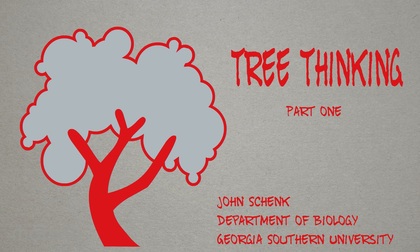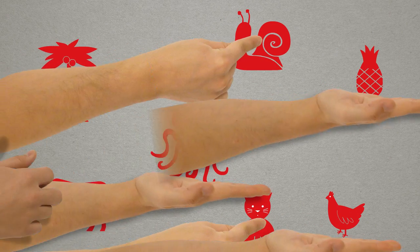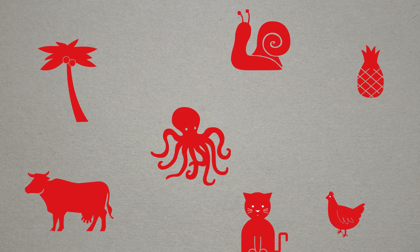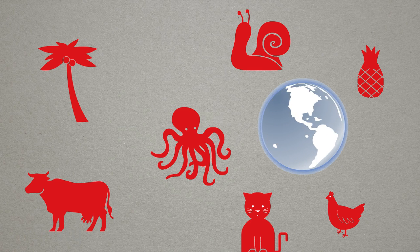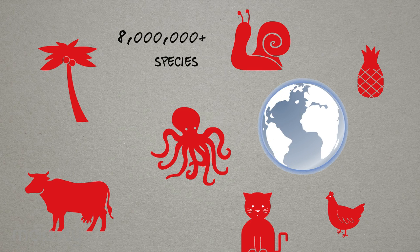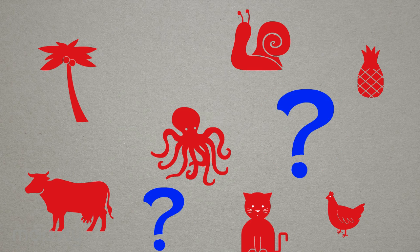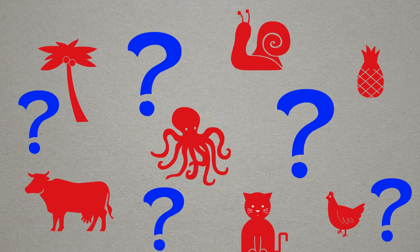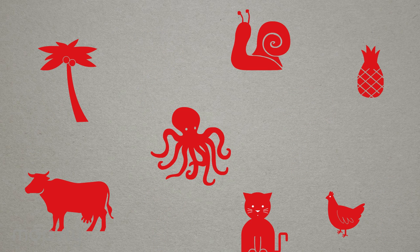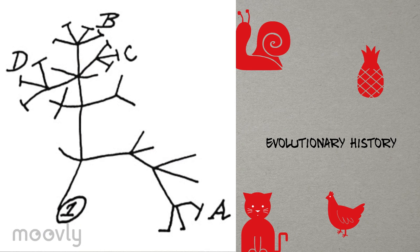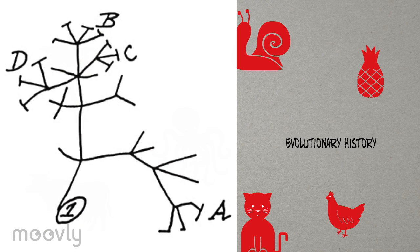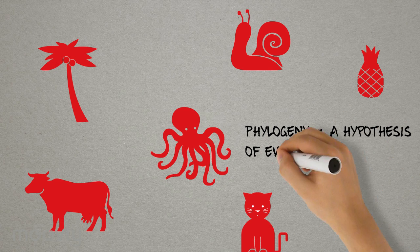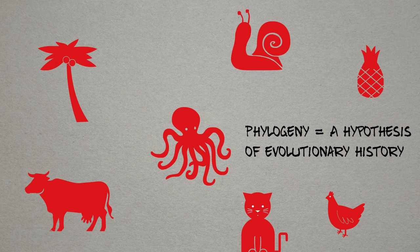How do biologists think about and organize biodiversity as it pertains to evolutionary history? Biologists have long appreciated the amount of biological diversity on Earth, but with over 8 million species of plants and animals, how do biologists classify and study Earth's enormous diversity? One approach is to classify species according to their evolutionary history, which is depicted in graphical form as a phylogenetic tree. A phylogeny is a hypothesis of evolutionary history.